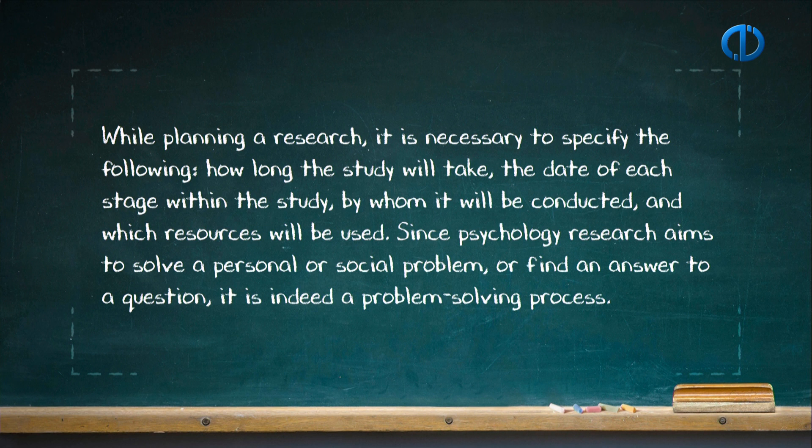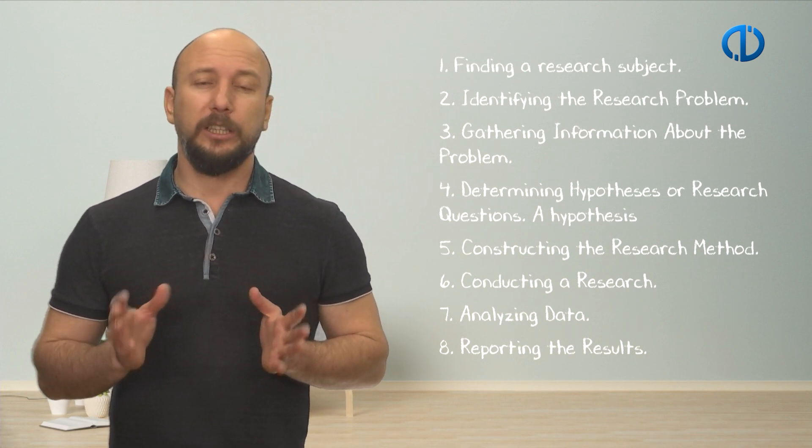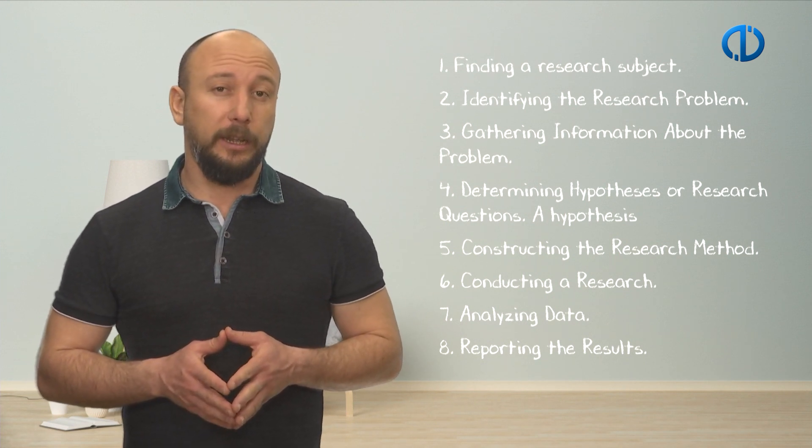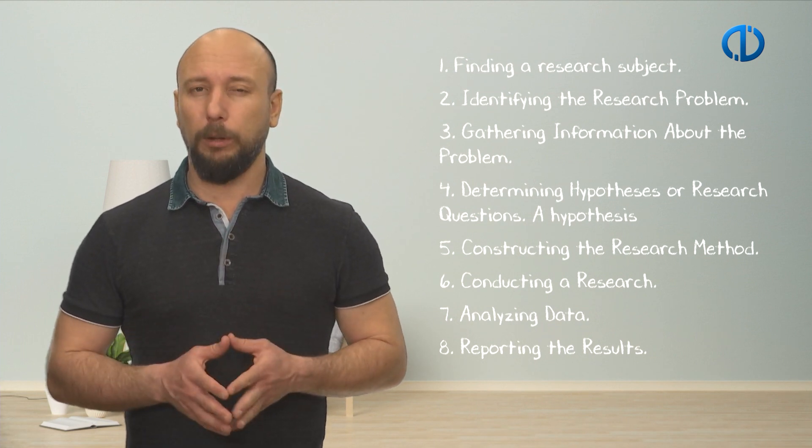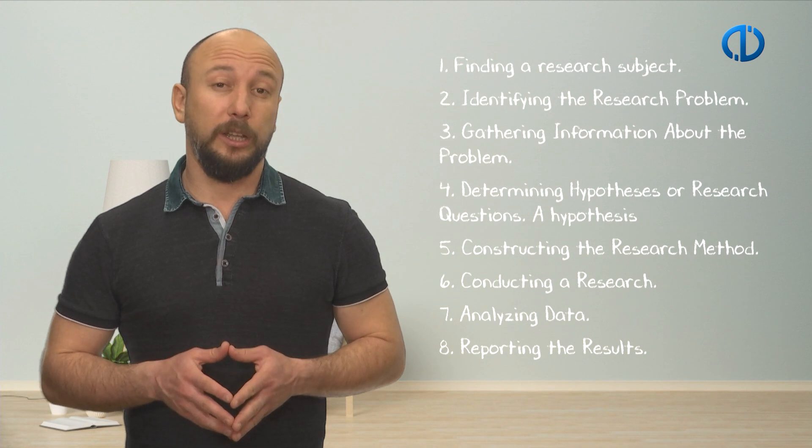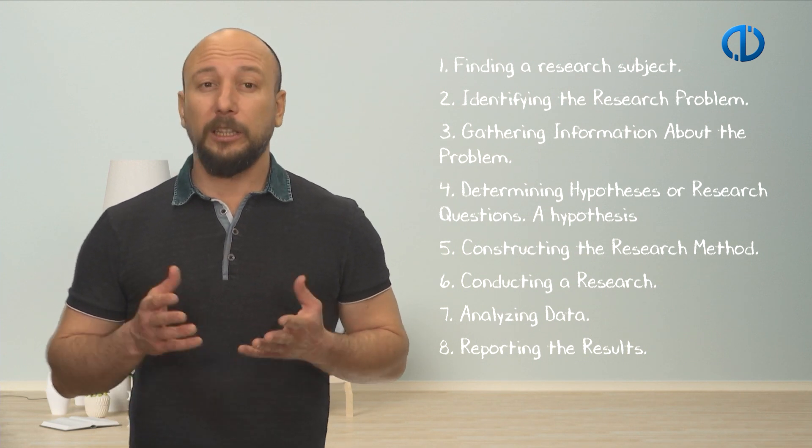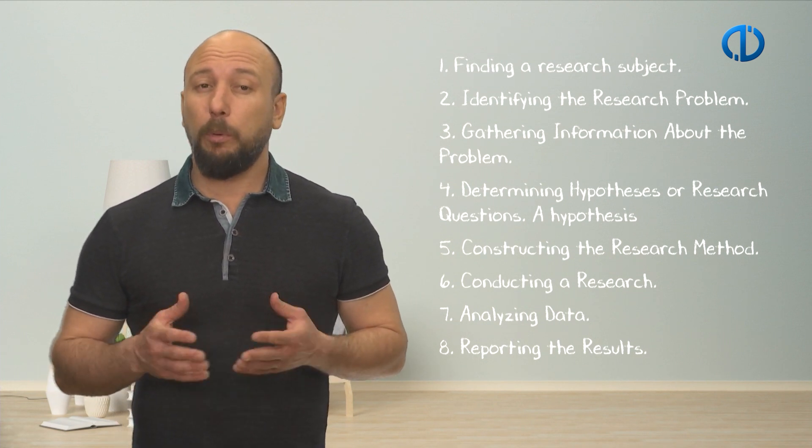Psychological research process begins with statement of the topic, ends with reporting the study. Let's clarify these stages briefly. Finding a research subject. Identifying the research problem. Gathering information about the problem. Determining hypotheses or research questions. Constructing the research method. Conducting a research. Analyzing data. And reporting the results.